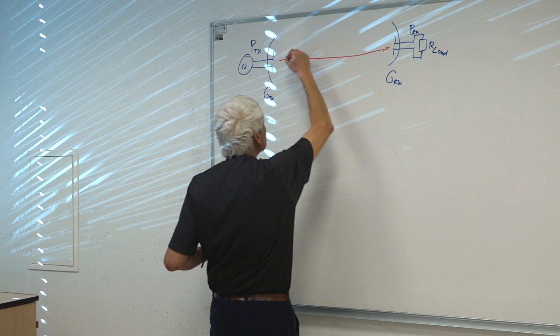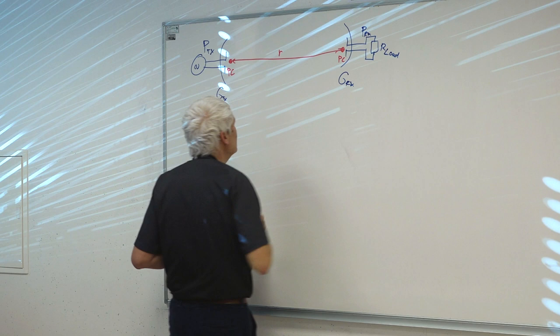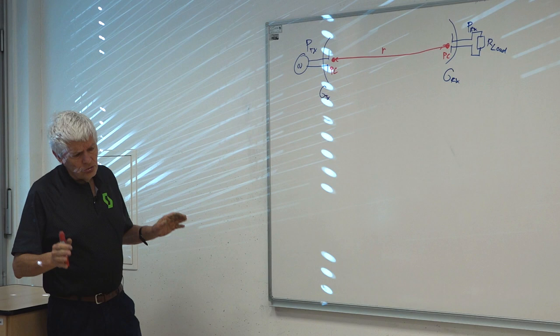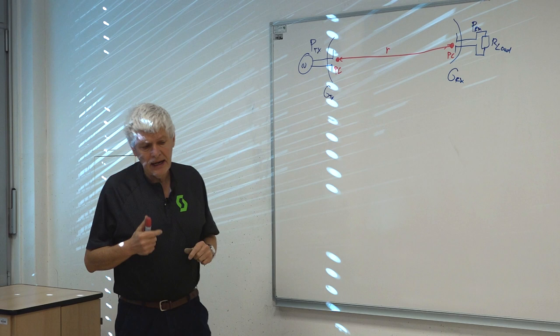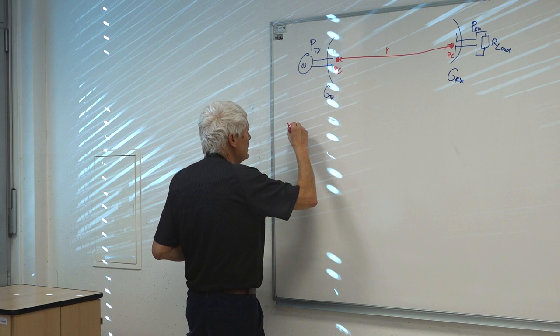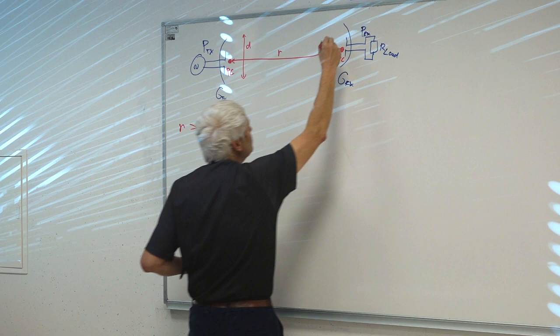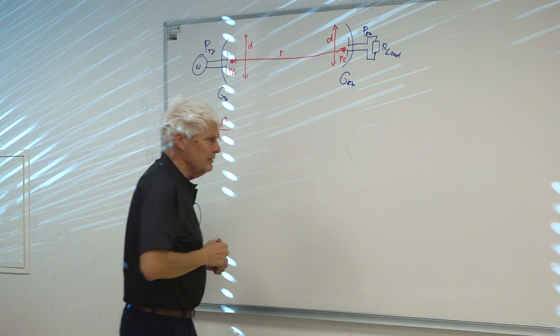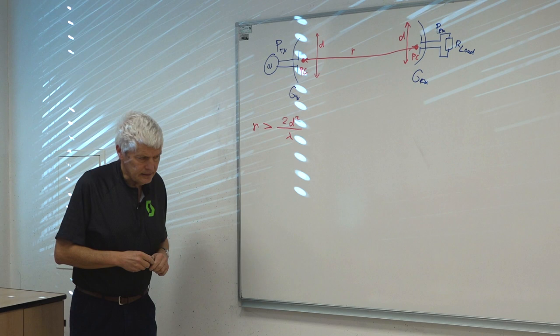The distance between the two antennas certainly plays a role in propagation. We should take the distance between the face center of one antenna and the other. In usual radio communications this distance is so long that the exact position of the face center doesn't matter. The problem happens in the lab, where we keep the smallest possible distance. We should have a distance larger than the Rayleigh distance 2d²/λ, where d is the dimension of the antenna. Only in the Fraunhofer region, beyond the Rayleigh distance, can we talk about the Friis equation.